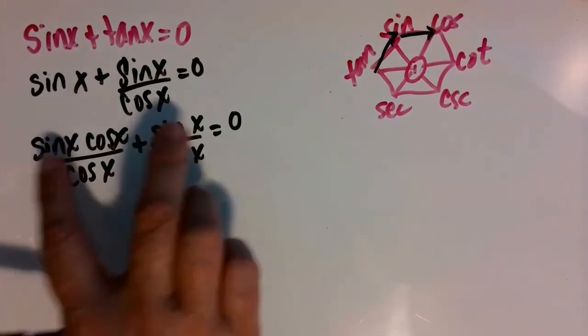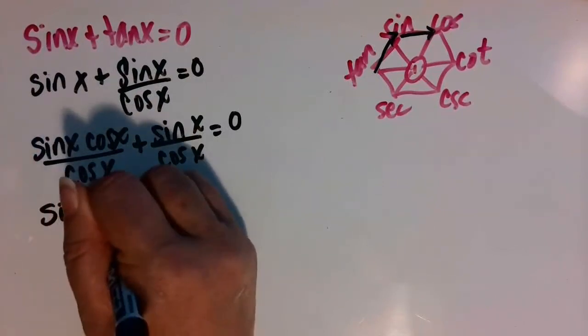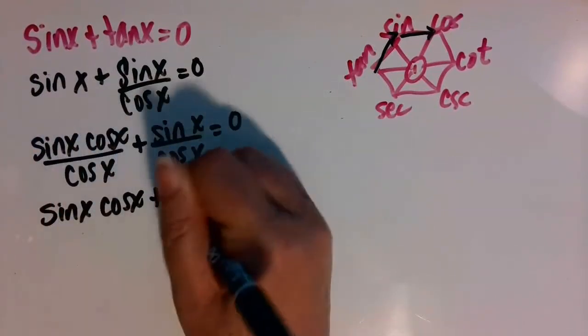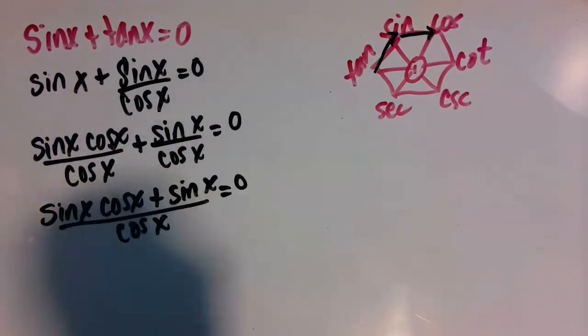Now we have a common denominator. We can go ahead and add the numerators. We'll have sine of x cosine of x plus sine of x all divided by cosine of x equals zero.